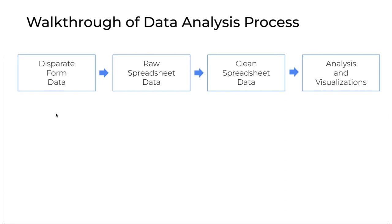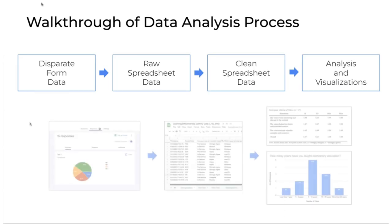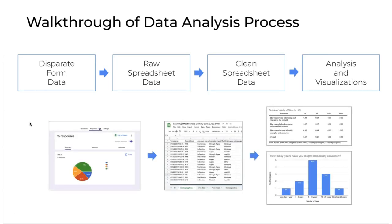We want to model that process and walk through it together with some dummy data. Essentially, we're going from a Google Form summary to messy spreadsheet data, then cleaning it up into something meaningful for analysis, and finally calculating numbers to build a table or create charts. That's the trajectory for what we want to do.